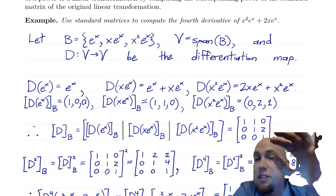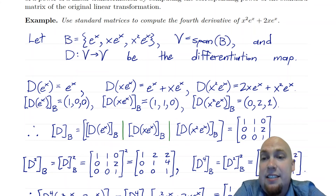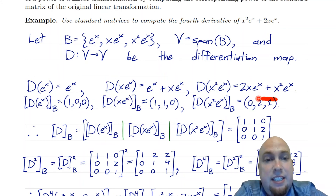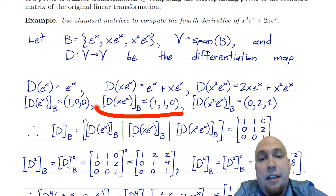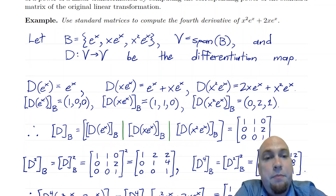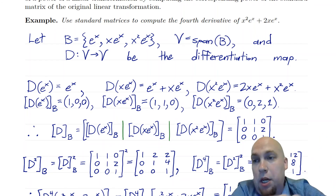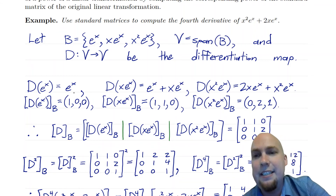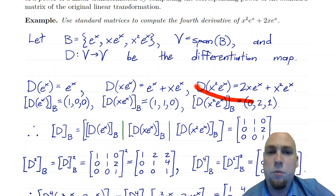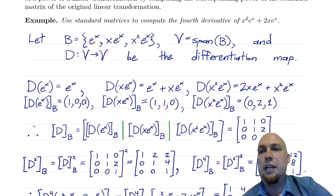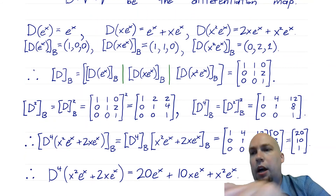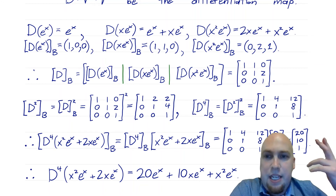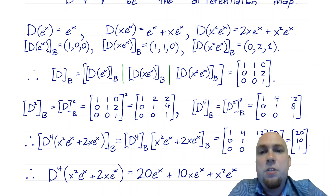Here's how we do that. First, we construct the standard matrix of D itself. The way you do that — as covered last lecture — you plug each of the basis vectors into the linear transformation and compute the coordinate vectors of the results, taking the derivative using the product rule. We're solving a calculus problem using linear algebra, but we do need a tiny bit of calculus here — that's the only calculus we'll do. The rest is purely linear algebra.